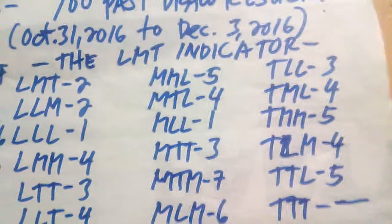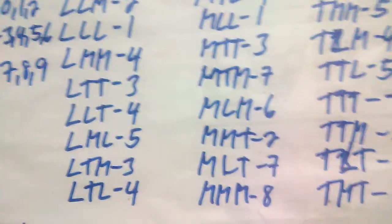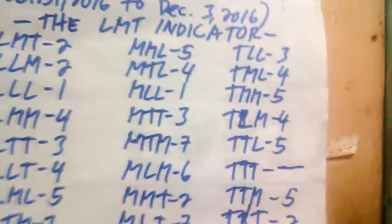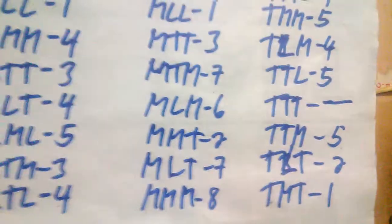On the second column, LLL had 4 and LLL had 5. TMM had 5. TLM had 4. TTL had 5. There is no TTT. TTM had 5. TLT had 2. TMT had 1. Again, this is for the past 100 draw results from October 31, 2016 to December 3, 2016.